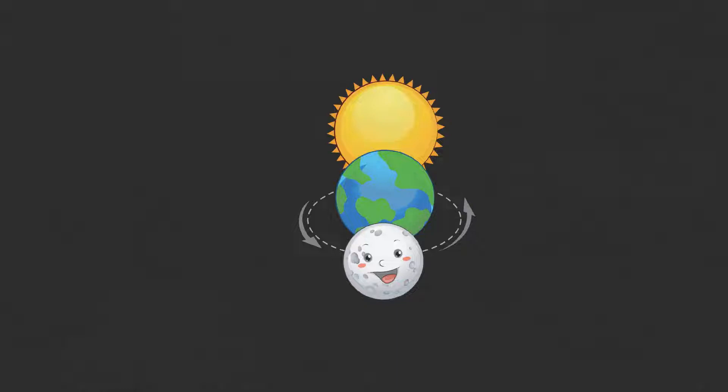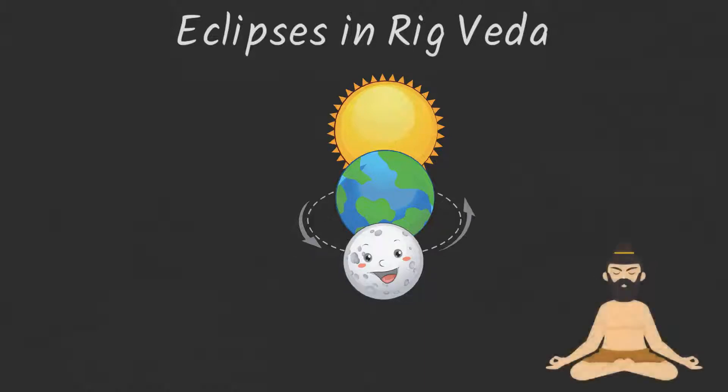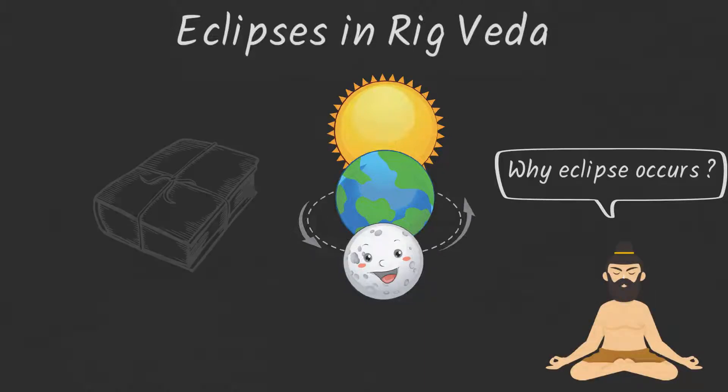The earliest reference to an eclipse in the subcontinent can be found in the earliest of Indian written records in the Rig Veda. Shir Aturi explained scientifically why eclipses occur.